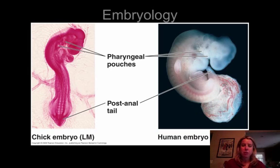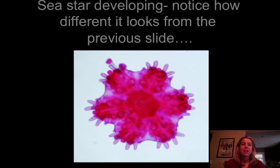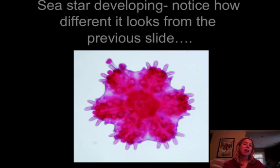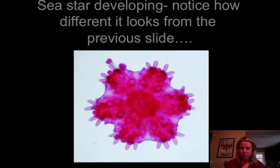Whereas if we were to compare these to a sea star developing, you can see that there's really not any sort of common anything between them. So it would be the outlier, which means it's not as closely related to those other organisms.